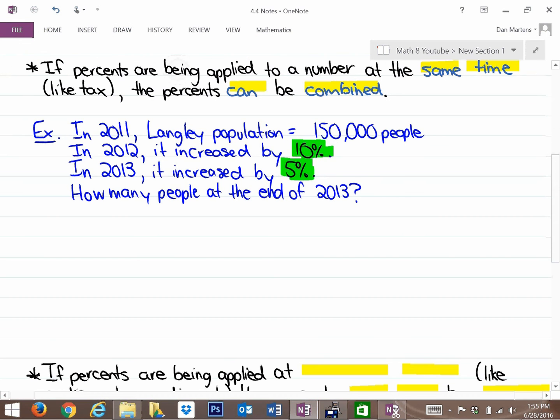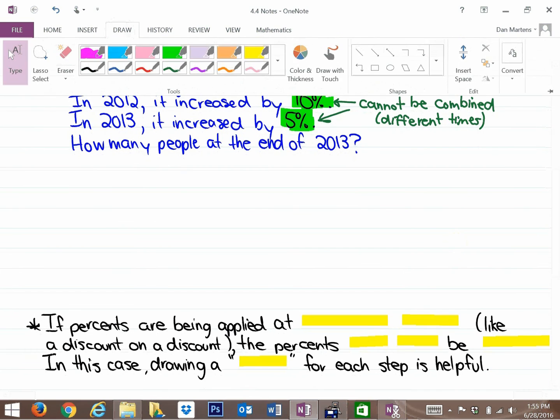So the first thing here is to understand that you are not allowed to combine the 10% and 5% to be a 15% increase, because the second increase will be on a different and new 2012 population. Those cannot be combined, and the reason behind that is because they are at different times and being applied to different numbers.